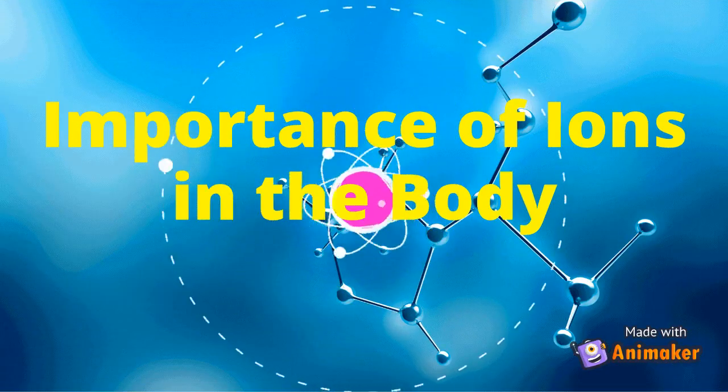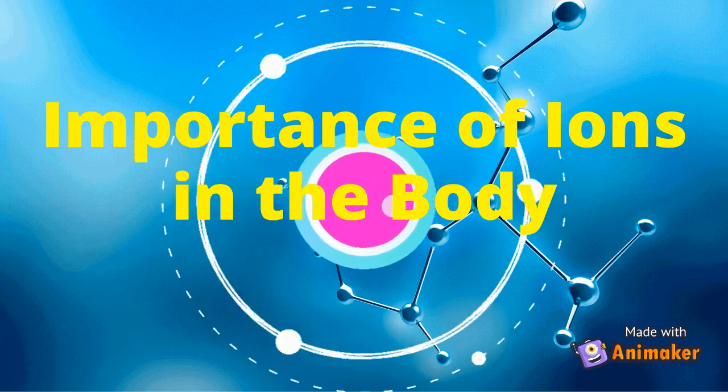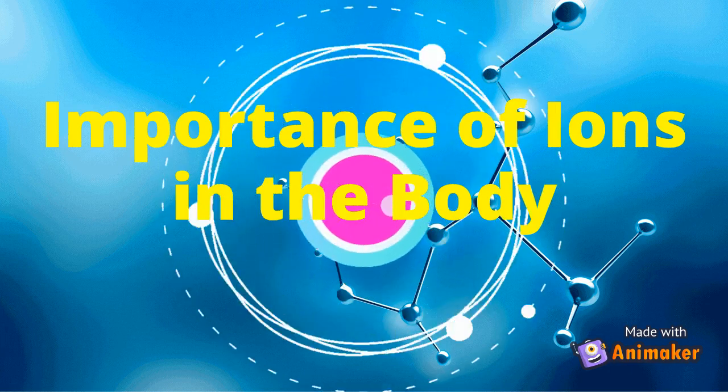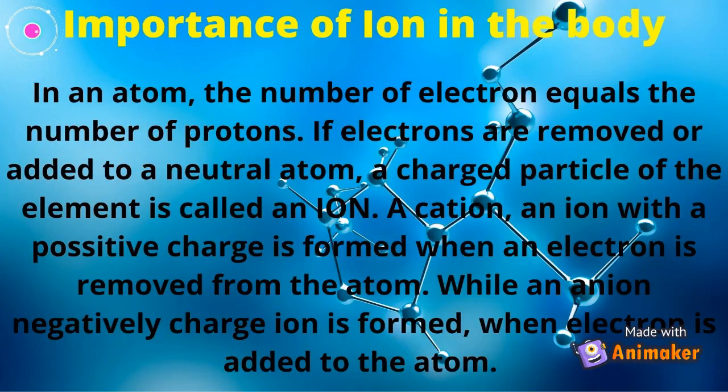Let's have the importance of ions in the body. In an atom, the number of electrons equals the number of protons. If electrons are removed or added to a neutral atom, a charged particle of the element is called an ion. A cation, an ion with a positive charge, is formed when an electron is removed from the atom. While a negatively charged ion is formed when an electron is added to the atom.